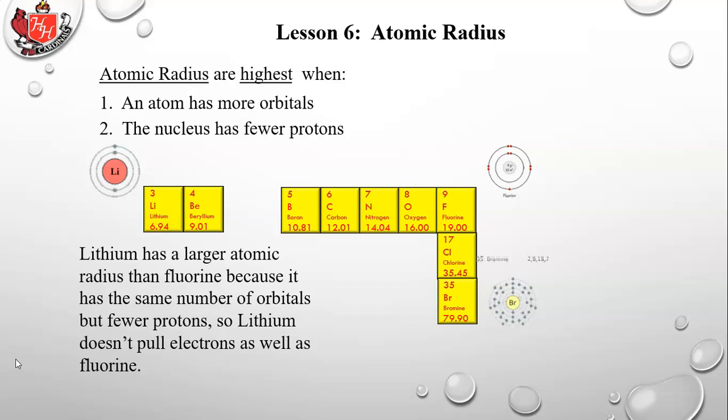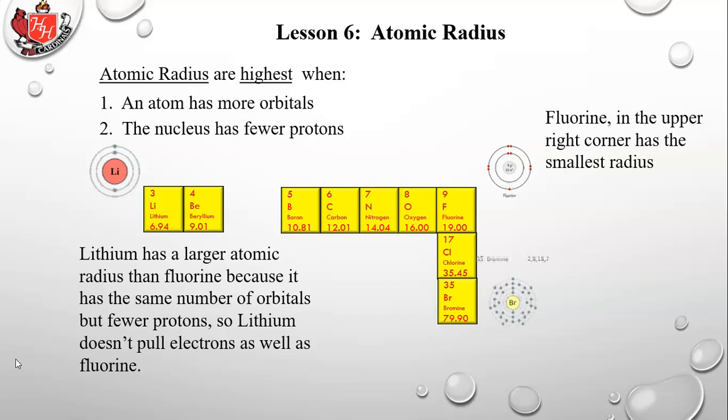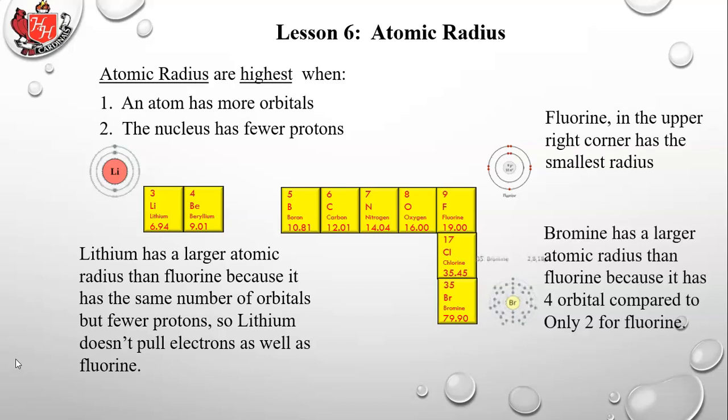Fluorine in the upper right has the smallest radius in its period. Bromine has a larger atomic radius than fluorine because it has four orbitals compared to fluorine's two — each additional orbital places electrons physically farther from the nucleus. Although bromine has 35 protons vs. fluorine's 9, the extensive shielding and the physical distance of additional orbitals more than offset the extra proton pull.